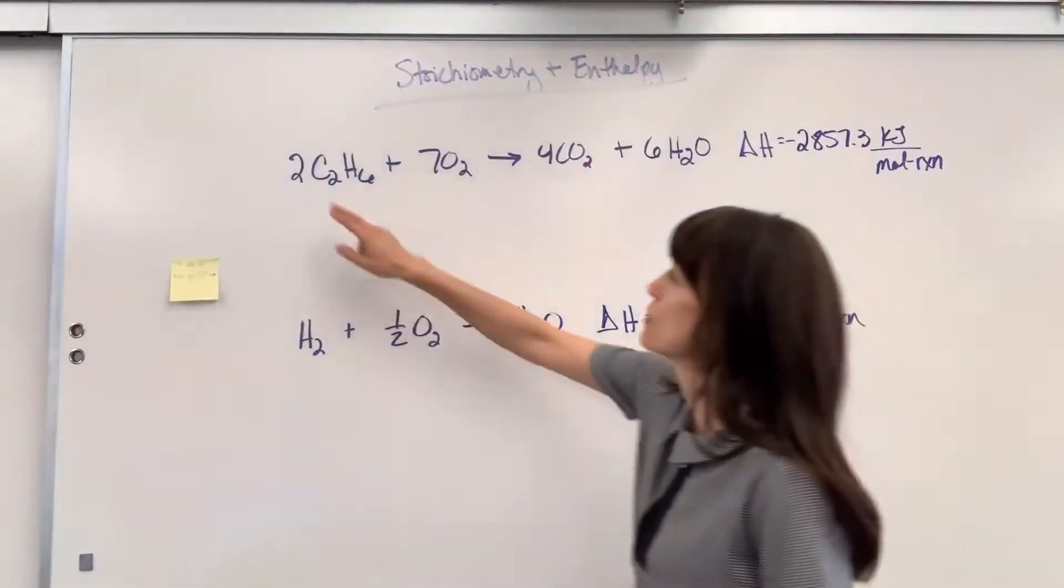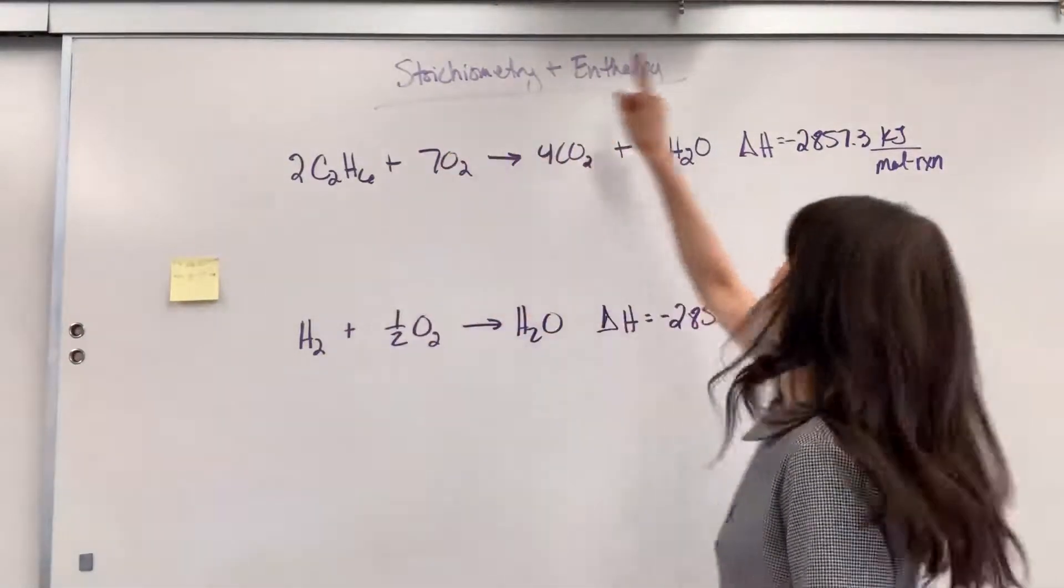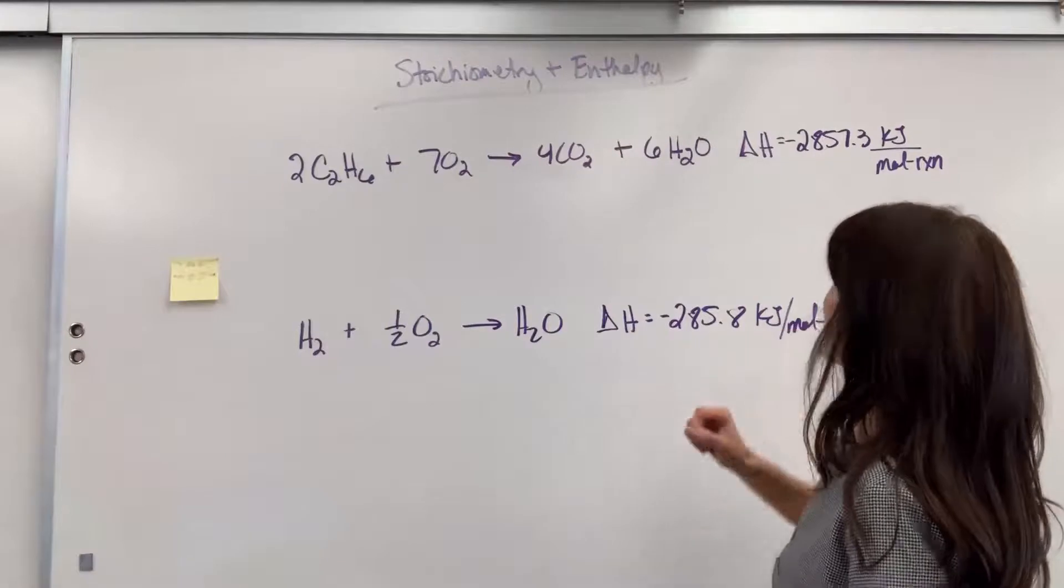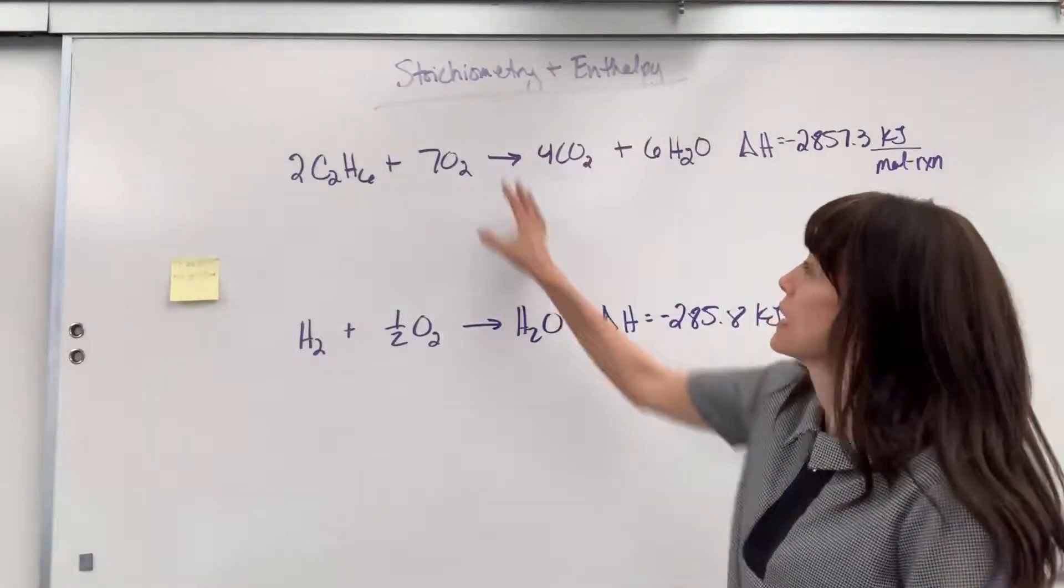So for example, two moles of ethane will produce 2,857.3 kilojoules. In this reaction, if you have exactly 7 moles of oxygen, it produces 2,800.